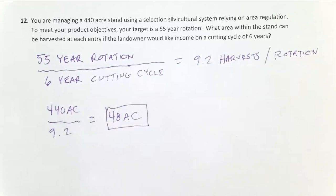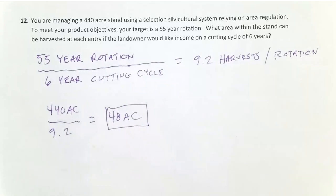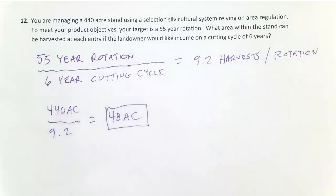You can look at the 48 acres and say that's doable — a logger will come out in my area to harvest 48 acres. Or maybe you get a number that's too small, like 10 acres, and no logger is going to bid on that job. If that's the case, maybe your cutting cycle is too short and you need a longer one, so you'd have to talk with the landowner about that. That's a simple area regulation.